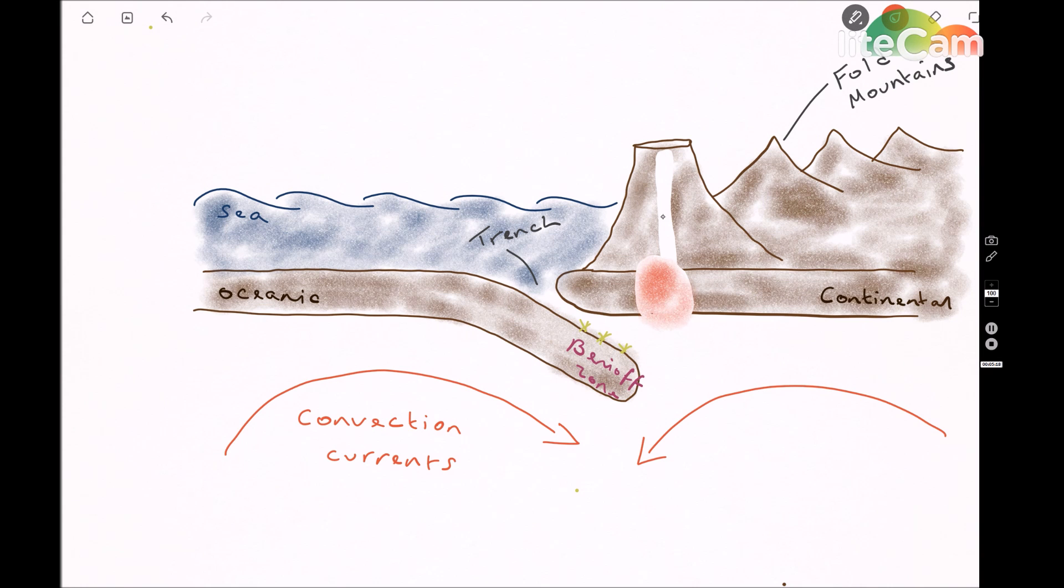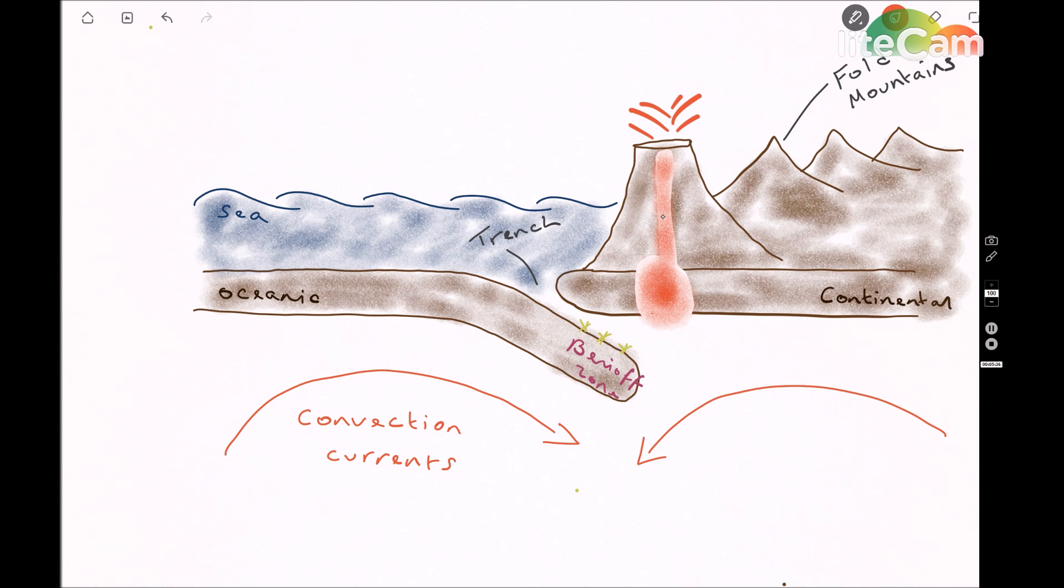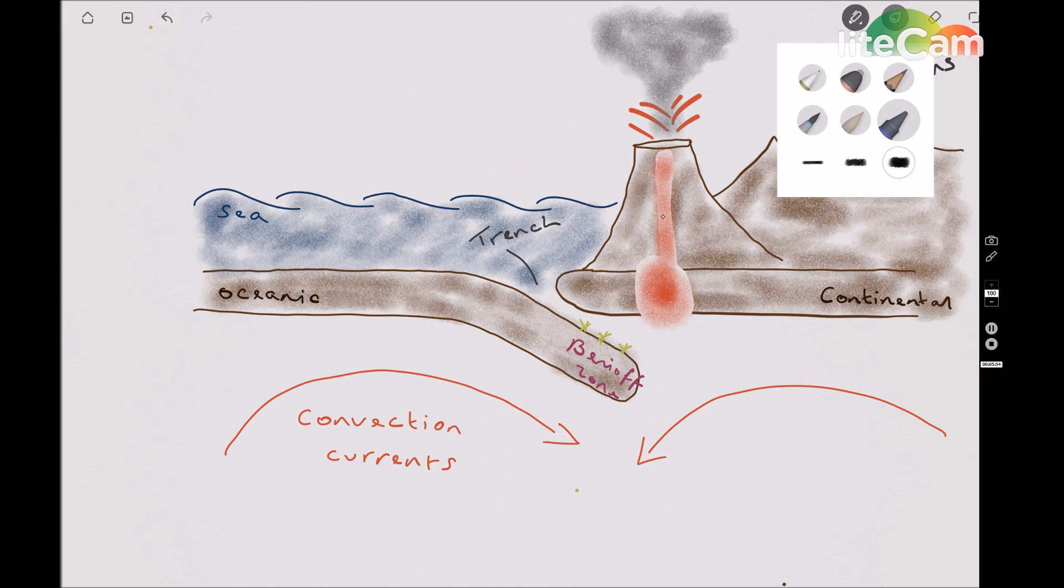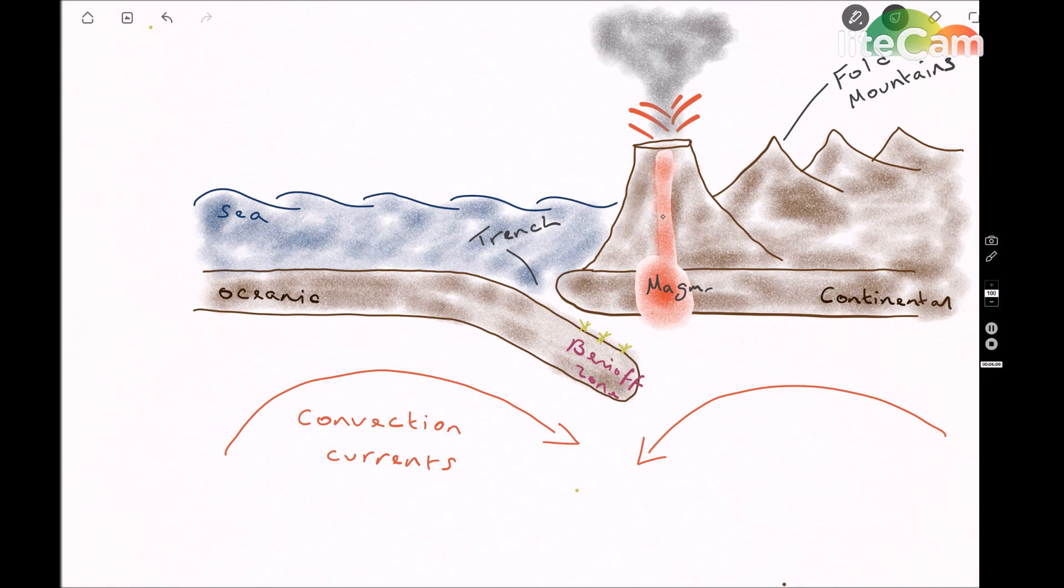The point where these two plates touch is called the Benioff zone, and you tend to get very, very large earthquakes that occur there. And that's where the melting goes on that actually forms the magma that is going to rise up and explode out of the volcano.